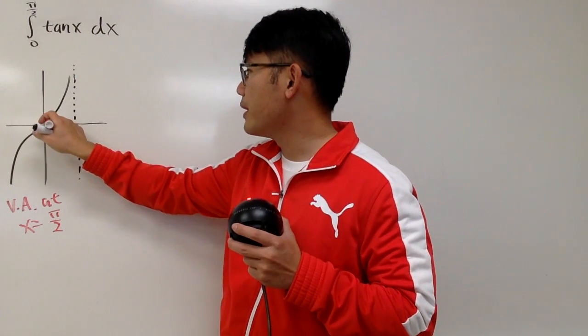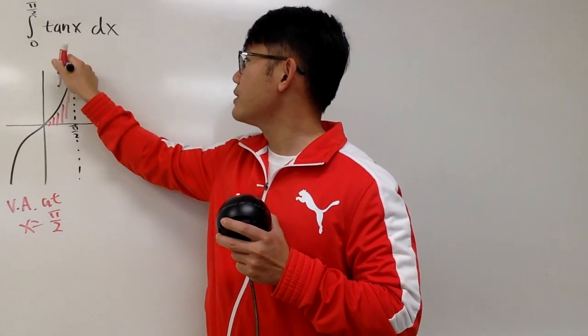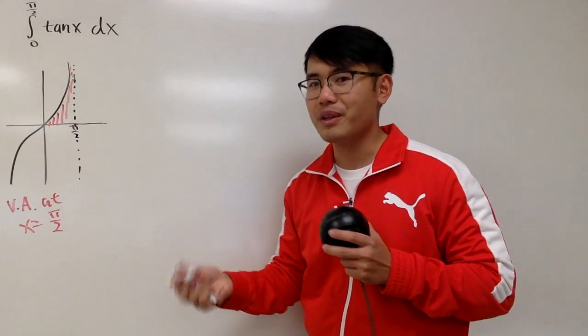And this integral is trying to calculate the area from 0 to pi over 2. We might still end up with a finite value, though. I don't know yet. We have to do the work.